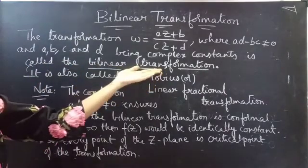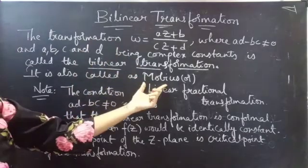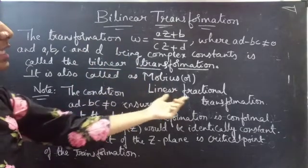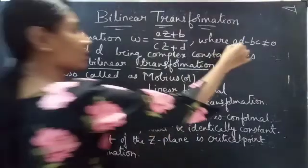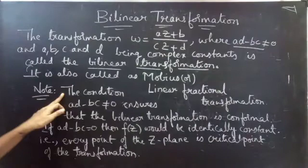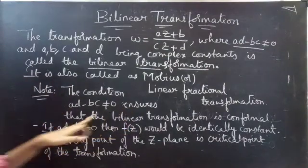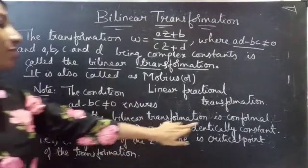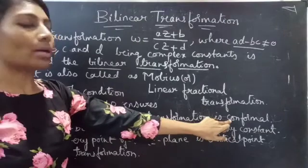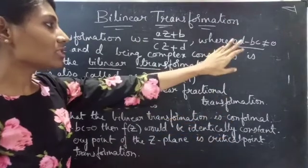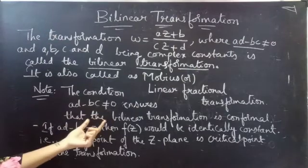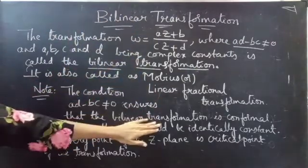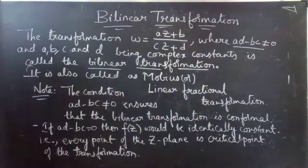The bilinear transformation is otherwise called Möbius or linear fractional transformation. Important note: the condition AD minus BC not equal to 0 ensures that the bilinear transformation is conformal.